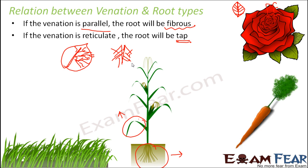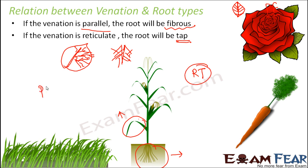Examples of reticulate venation with tap root system include carrot and rose. So RT — reticulate venation has a tap root system. PF — parallel venation has fibrous roots. This is how you can remember it, and this is how very easily you can determine which plant has which type of root.